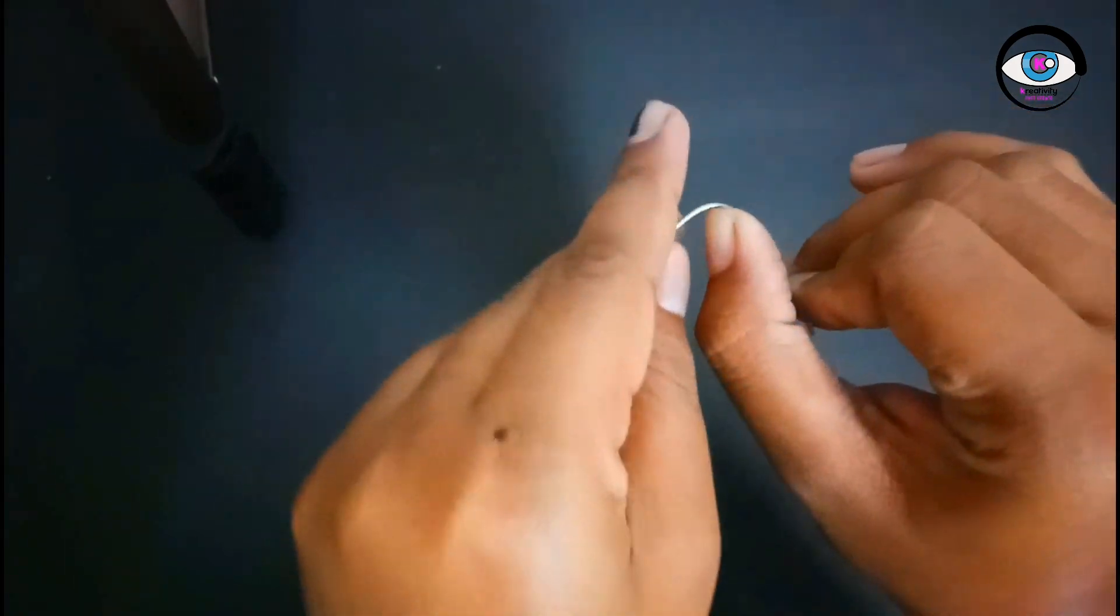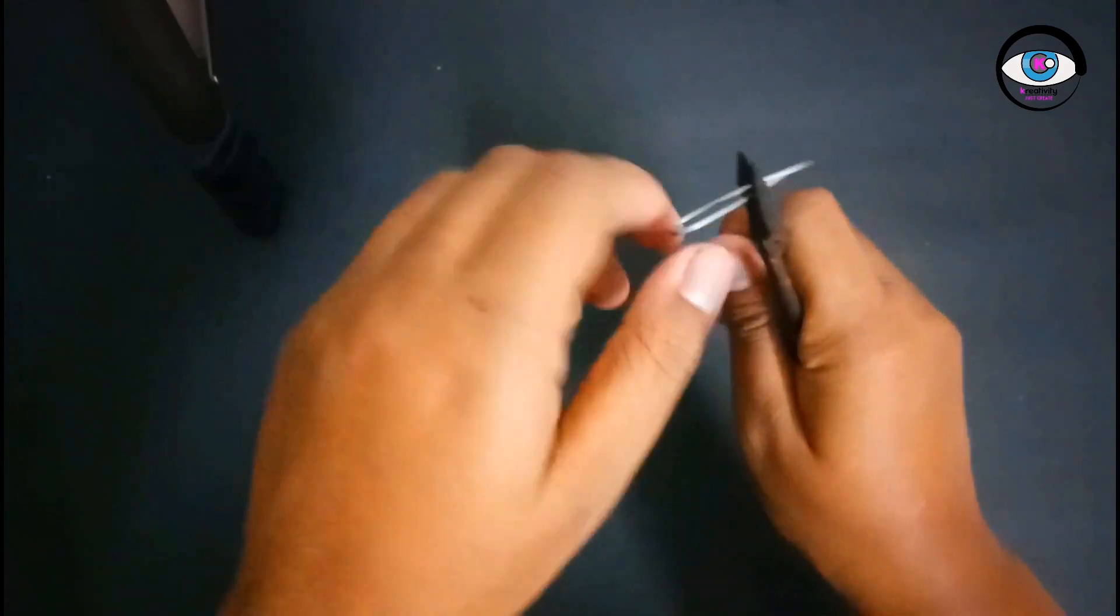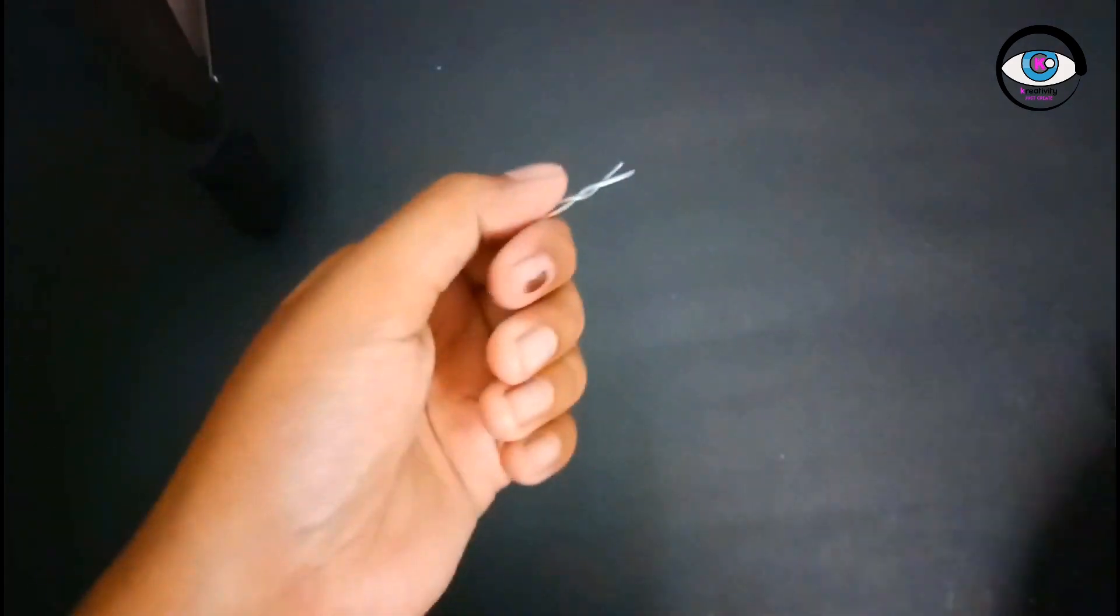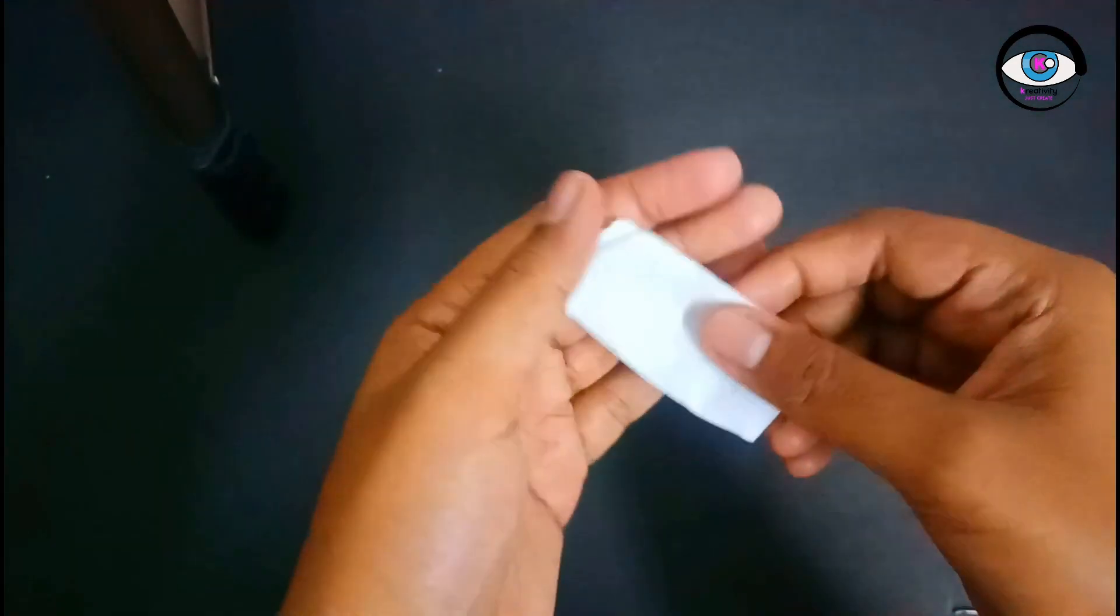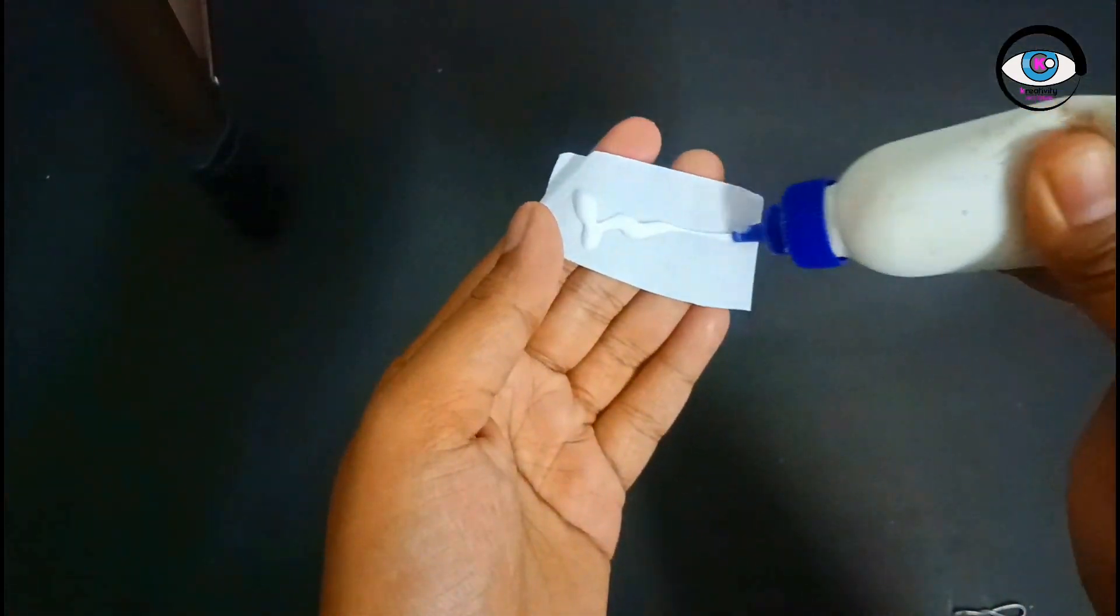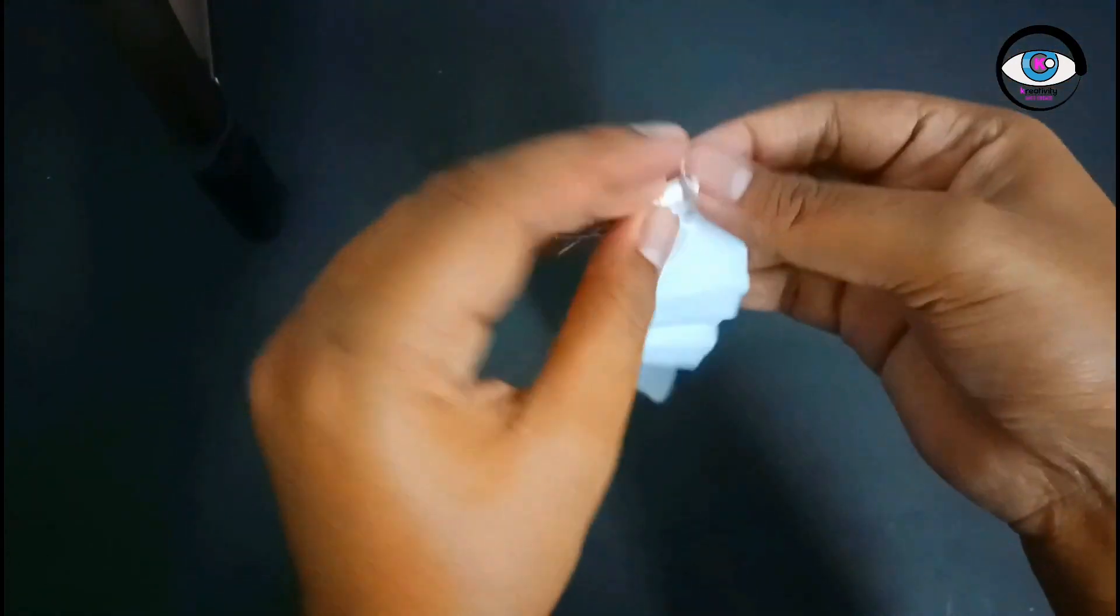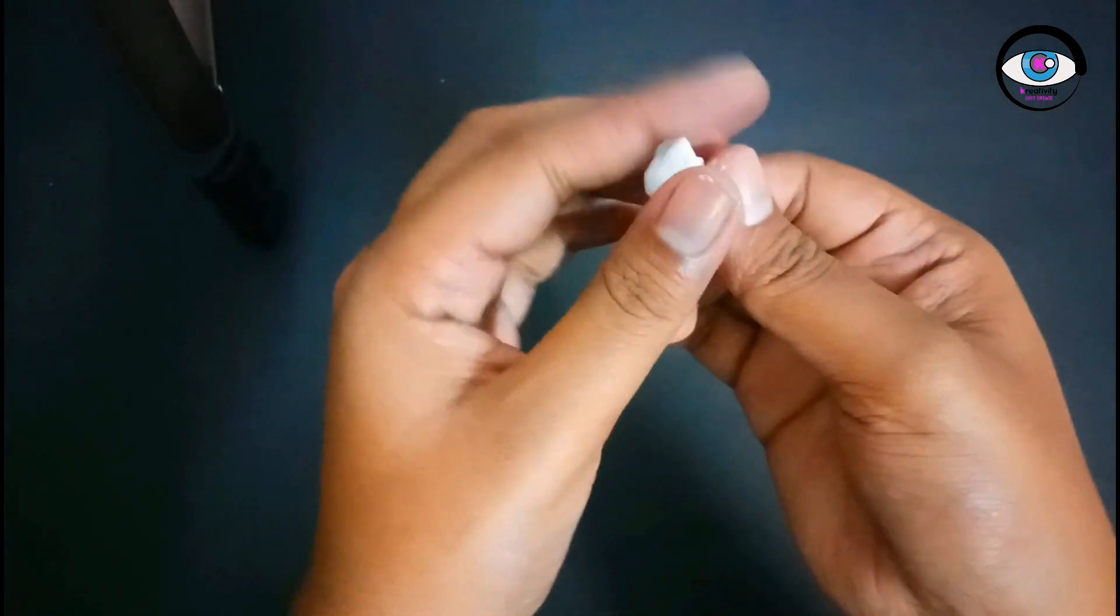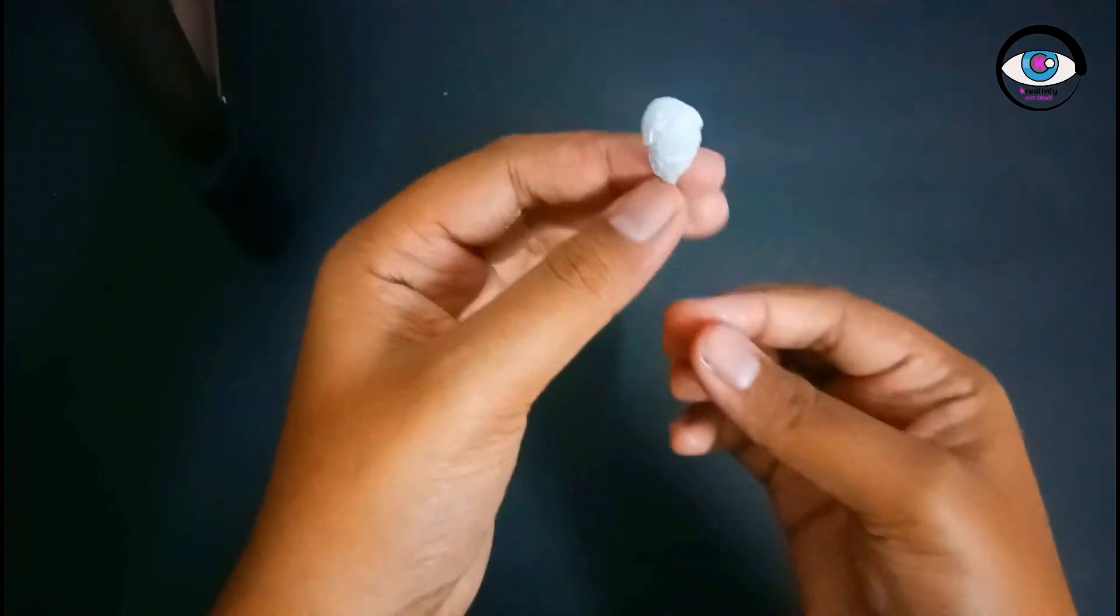Now, take a thin wire and bend it into a structure like this. After that, cover the upper part using tissue paper. And also make one more in the same way.